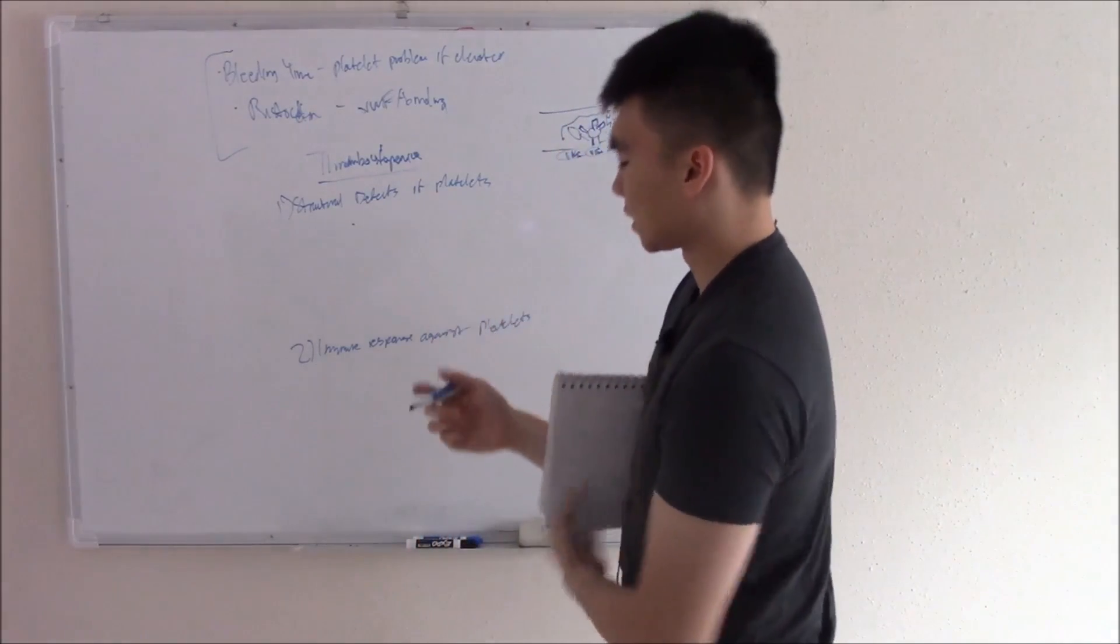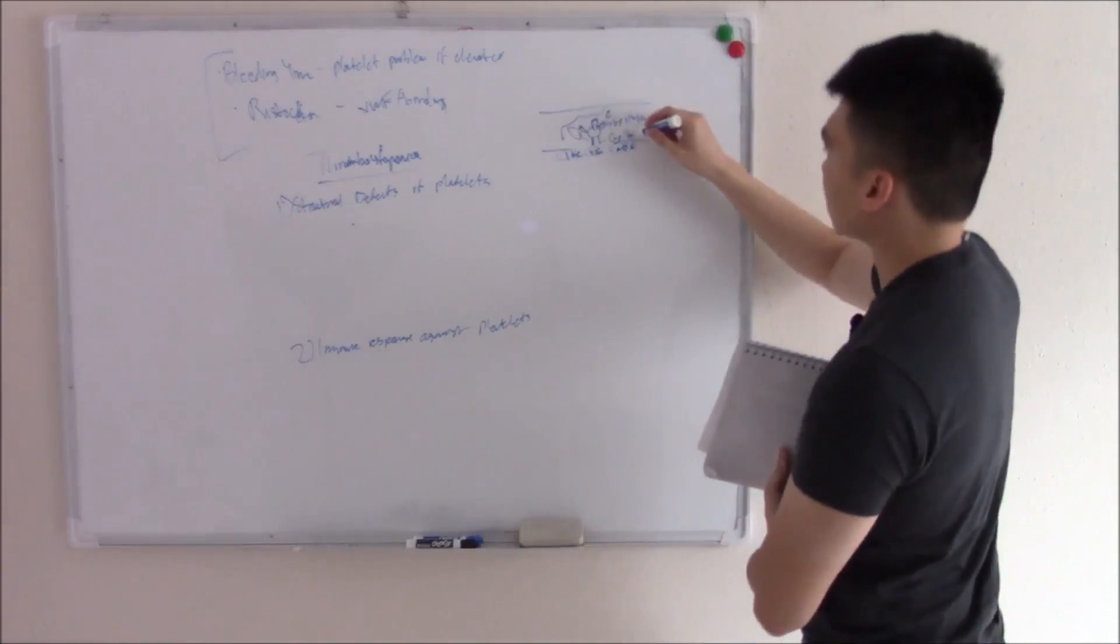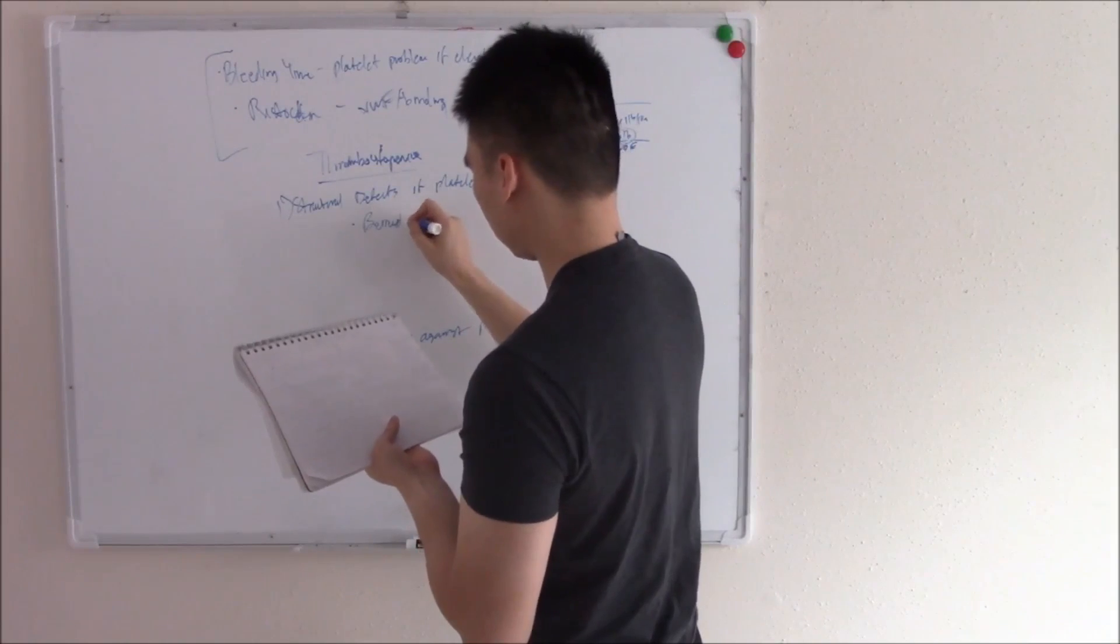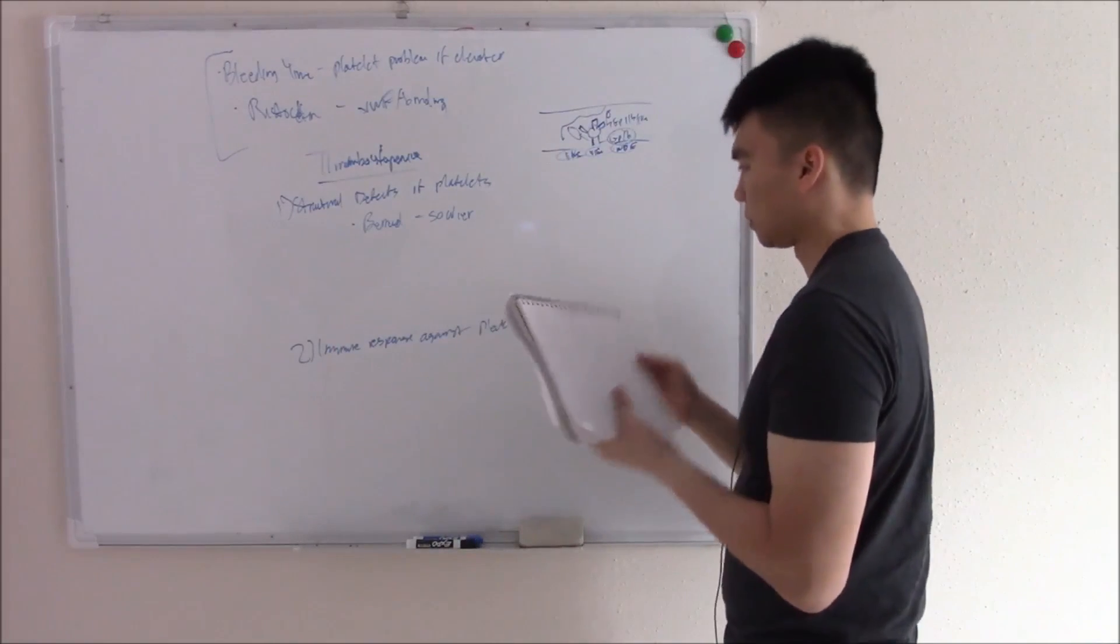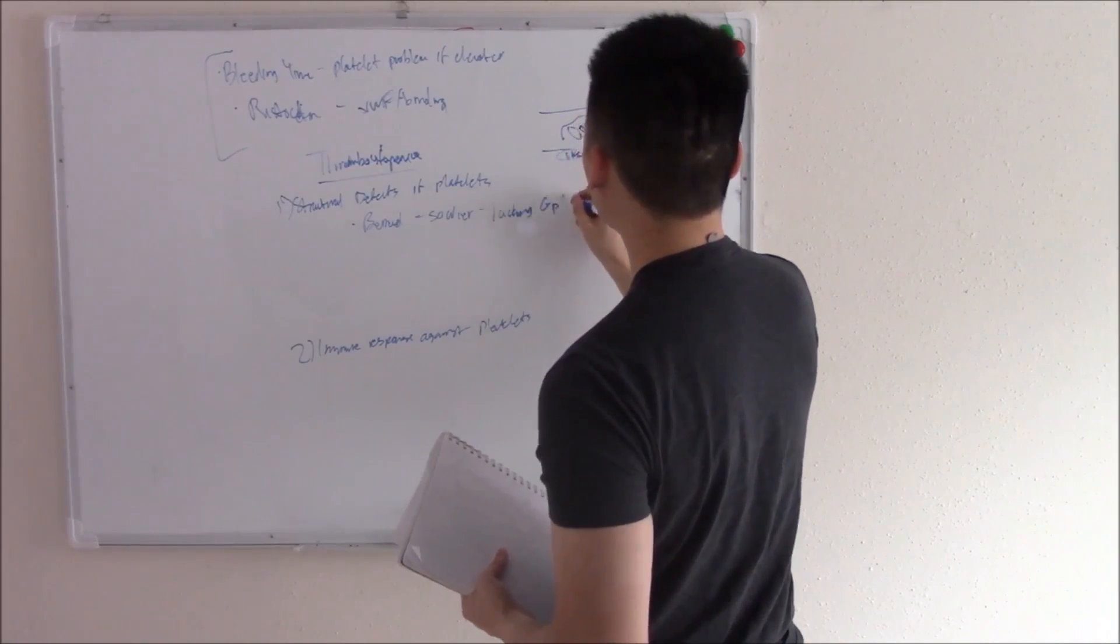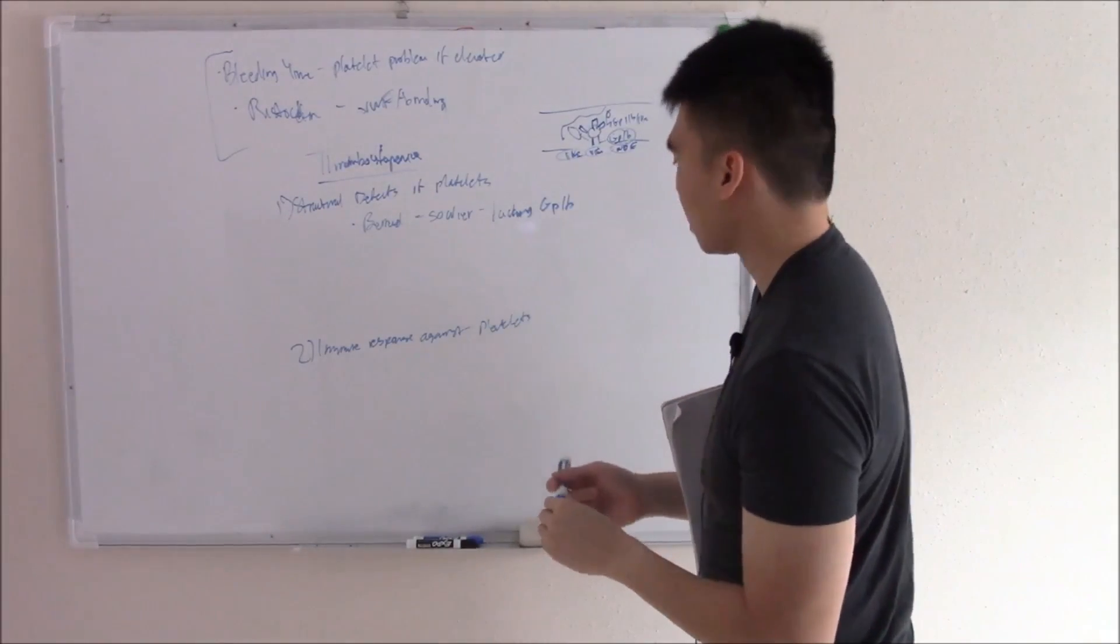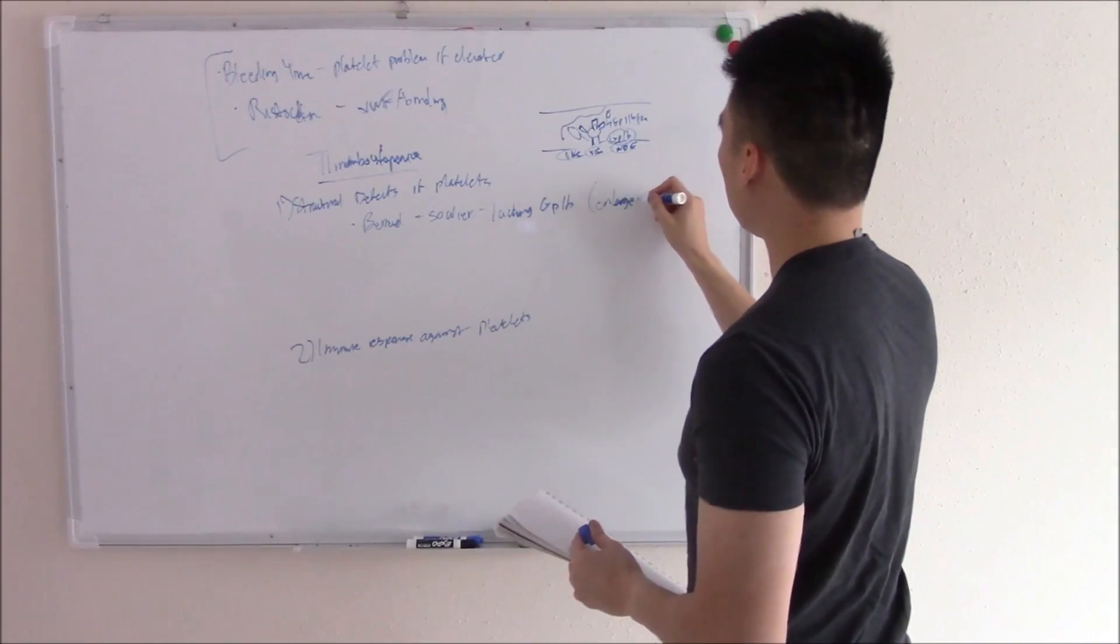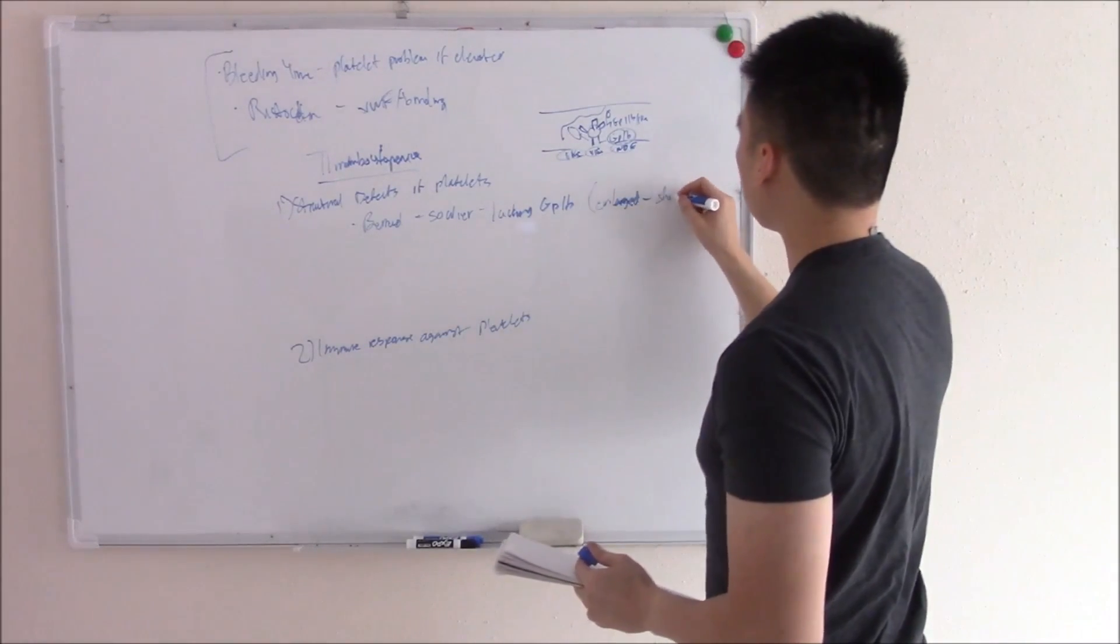What can go wrong? Well, for starters, we can have a defect in our glycoprotein GP1B. We call that Bernard-Soulier disease. And Bernard-Soulier disease, we're lacking that GP1B. So we can't form that initial adhesion to von Willebrand factor. And our platelets are going to look kind of funky. They're going to be enlarged. And also, because they're defective, they don't live as long. So they have a shortened lifespan.